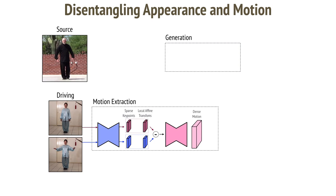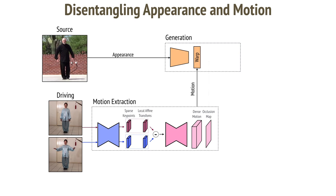To predict dense motion, we use another network, which additionally provides the occlusion map. We extract the appearance from the source image by passing it through the encoder. We then warp the features using the dense motion and multiply them by the occlusion map. This way the decoder knows which areas of the image require inpainting.